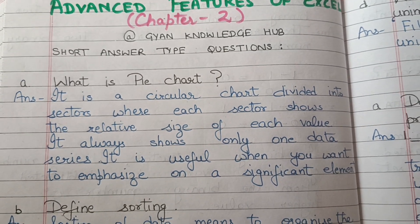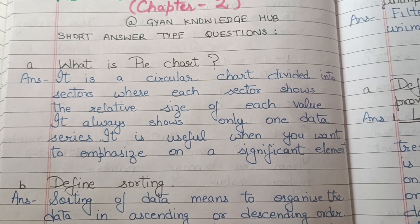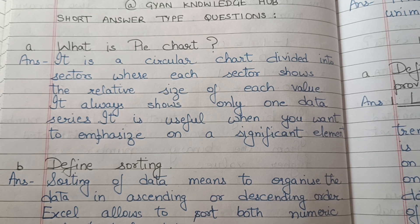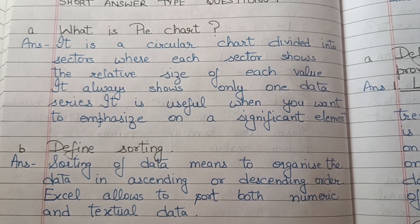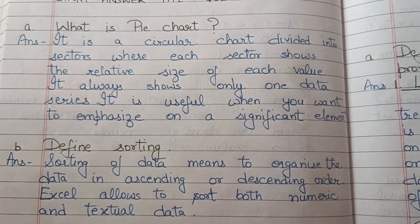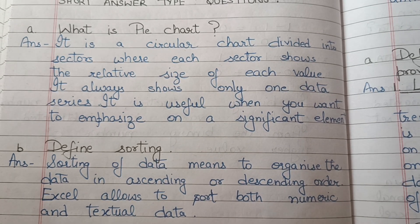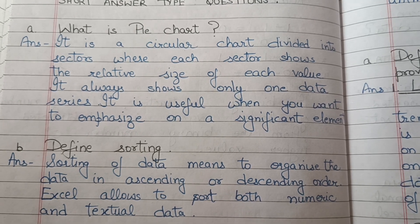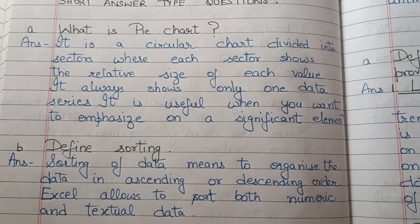Define sorting. Sorting of data means to organize the data in ascending or descending order. Excel allows sorting of both numeric and textual data. Sorting का मतलब होता है data को ascending order में या descending order में organize करना, और यह numeric और textual दोनों ही data में possible है।